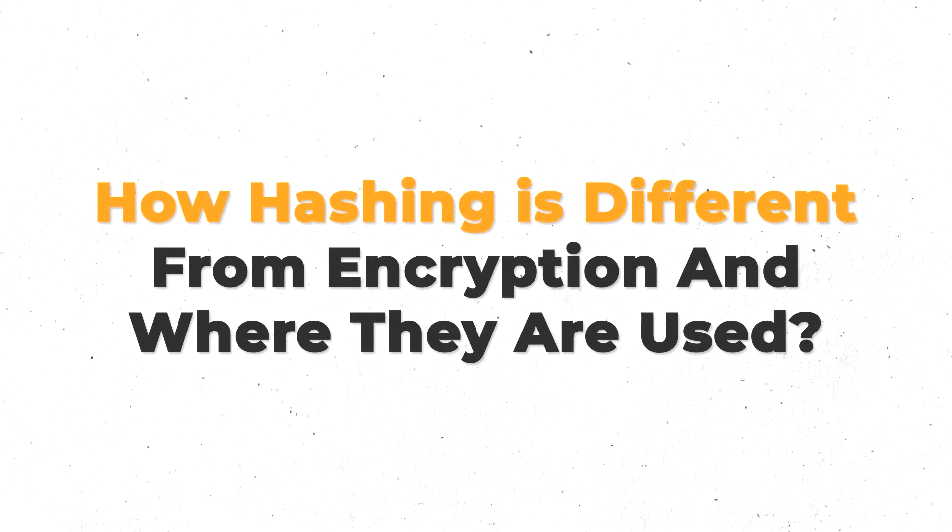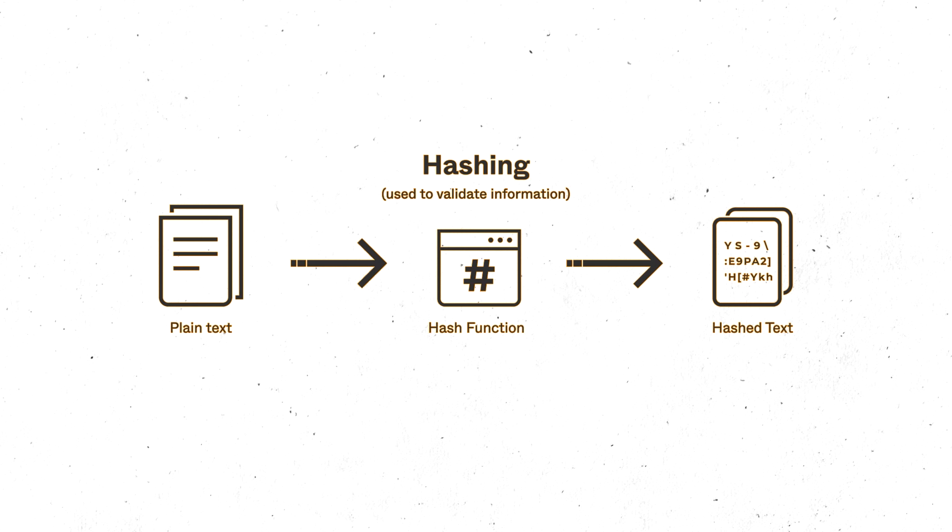The very first question the interviewer can ask is how hashing is different from encryption and where they are used. Hashing and encryption are two distinct cryptography techniques that serve different purposes in the realm of data security. Hashing is a one-way process that takes an input and generates a fixed-size output called a hash. It is designed to be irreversible, ensuring data integrity and verification during transmission or storage. Hashing finds its application in password storage, where hashed passwords are stored in the database to prevent exposure of plain text passwords in case of a breach.